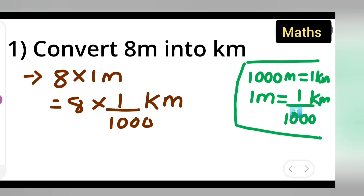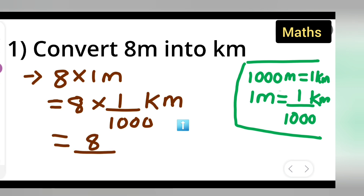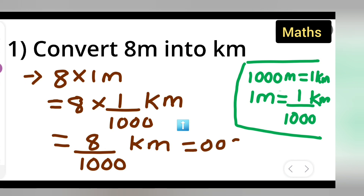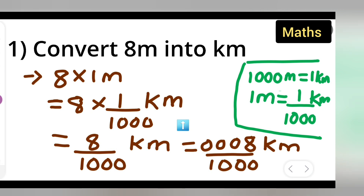Since 1 meter is 1 upon 1000 kilometer, multiply this with 8. You will get 8 upon 1000 kilometer. Now this is equal to 0008 upon 1000. There are three zeros because there is only one number over 1000, so you need to write three zeros in front.